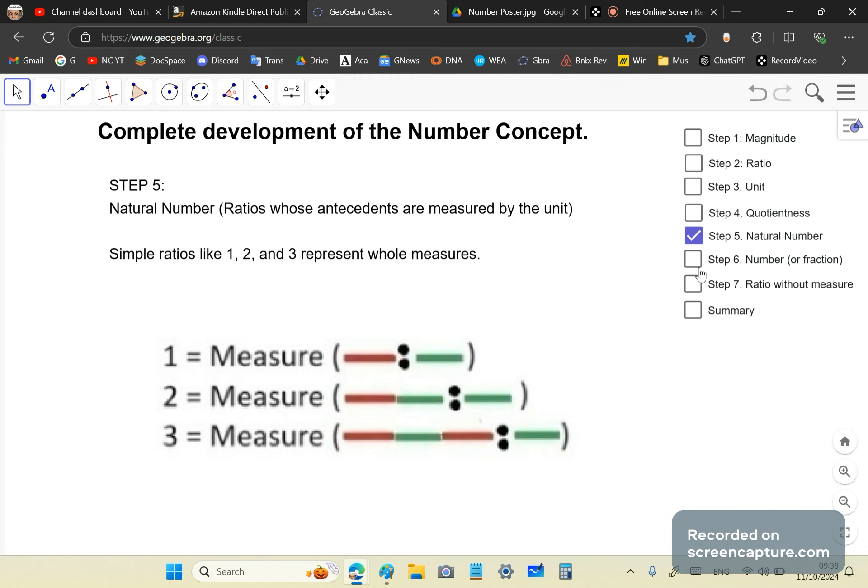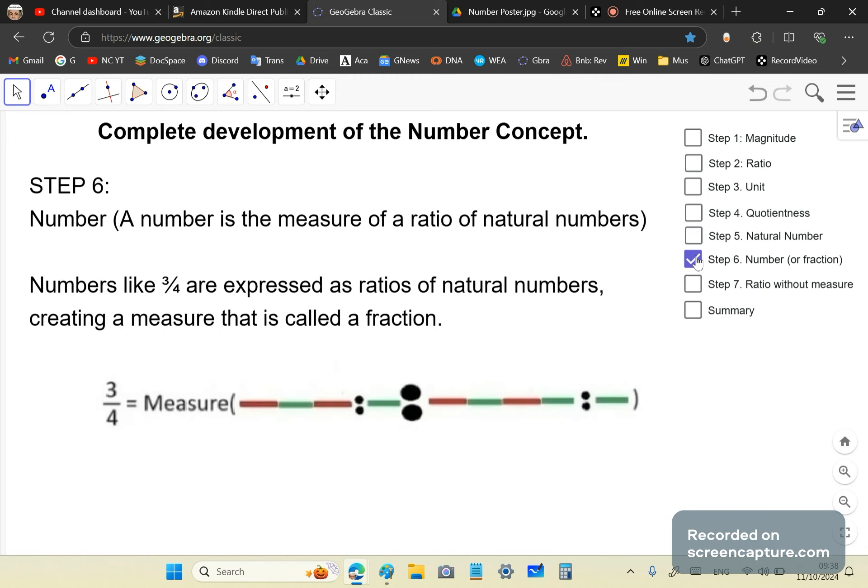The next step is the completion of number. There's nothing further than this. A number is the measure of a ratio of natural numbers. Now what we do is we take two ratios, which are natural numbers, and we get a fraction. It's just one more level of complexity. And why is this three quarters? Simply because this here is three, and this here is four. And that's the last, the completion of the story of numbers.